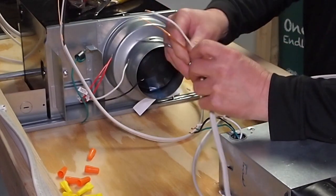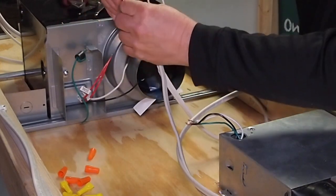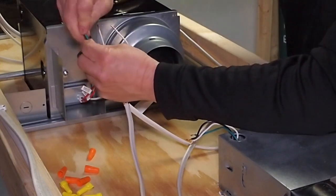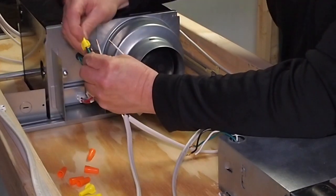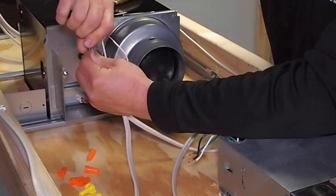So the first thing we are going to do is just get the ground wires hooked up to the ground wire on the fan. Wire nut that on there.